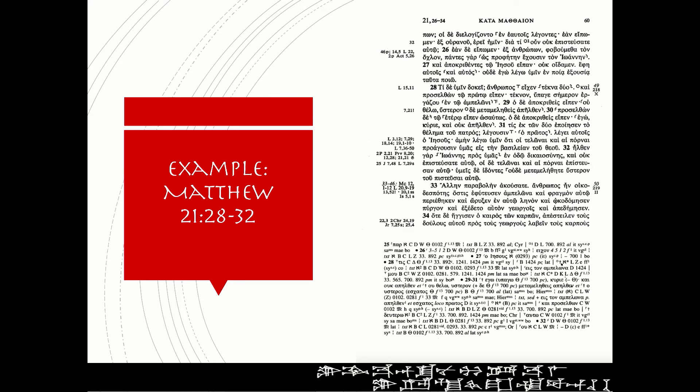Here we have a page from Nestle-Aland 27. By way of quick review this is the main body text of the critical edition and this is the apparatus down here. If you look through, this little angle iron is a symbol, this is an omission symbol here, here's another set of symbols, and so on. These are just symbols put into the text so that you can see where there are variations.